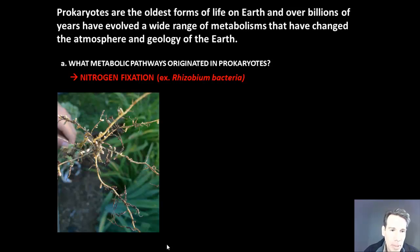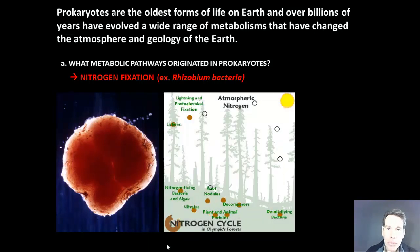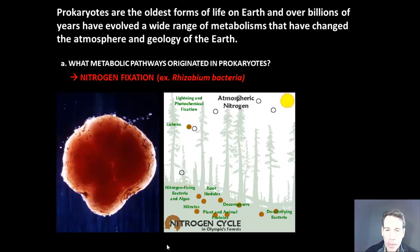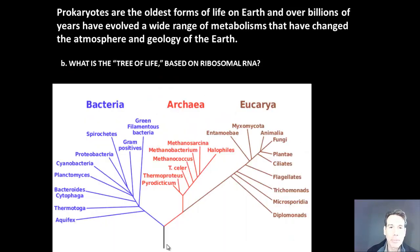Another form of metabolism is nitrogen fixation. We're looking at the roots of a bean plant, and if we zoom in we can see these little nodules, which contain a type of bacteria known as rhizobium bacteria, which convert nitrogen gas from the atmosphere into a form of fertilizer for the plant, helping it make proteins and nucleic acids as part of the nitrogen cycle.